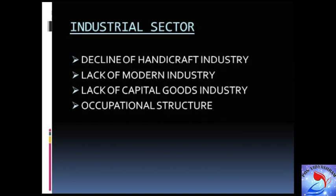The next is occupation structure, which is an indicator of poor industrial growth. The underdevelopment of the Indian economy is also evident from the occupation structure, which showed that 72% of people were engaged in agriculture. Industry employed only 11.9% of the workforce, while contributing only 25.3% to national income, whereas agriculture had a share of 57.6% of national income.